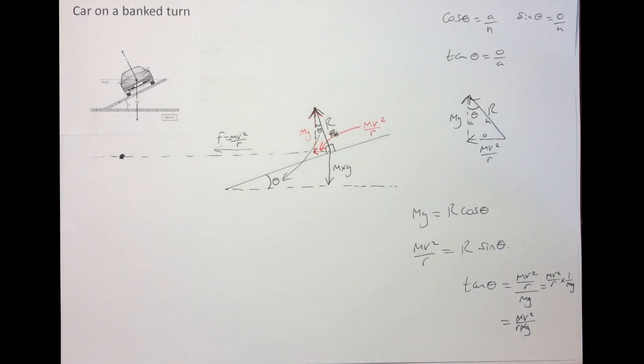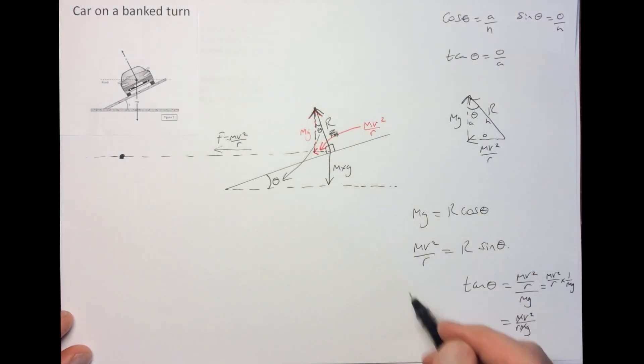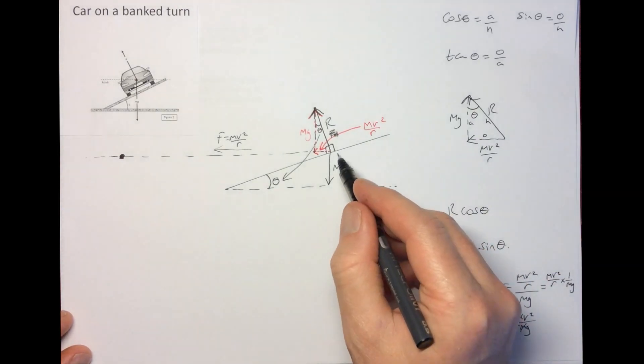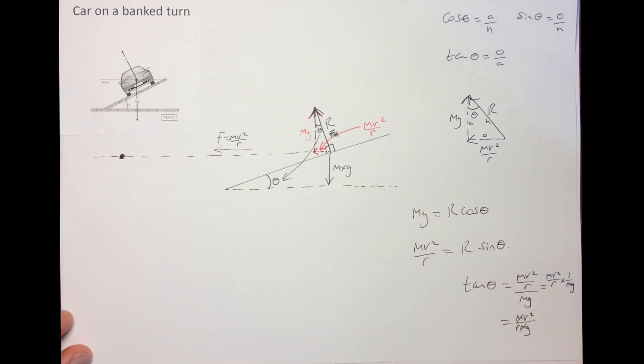All of these equations are valid provided there's no friction — we're assuming the track is frictionless.